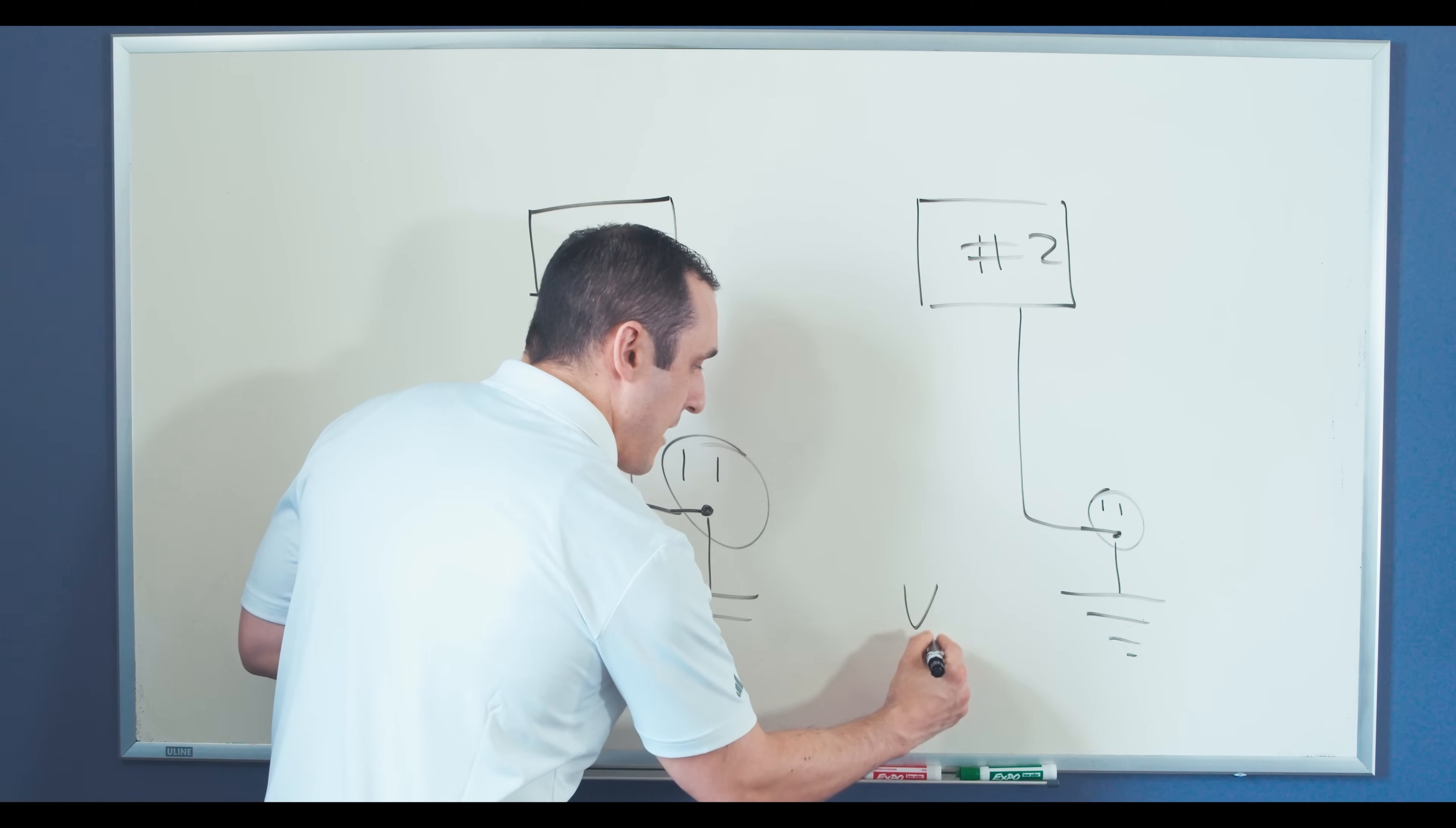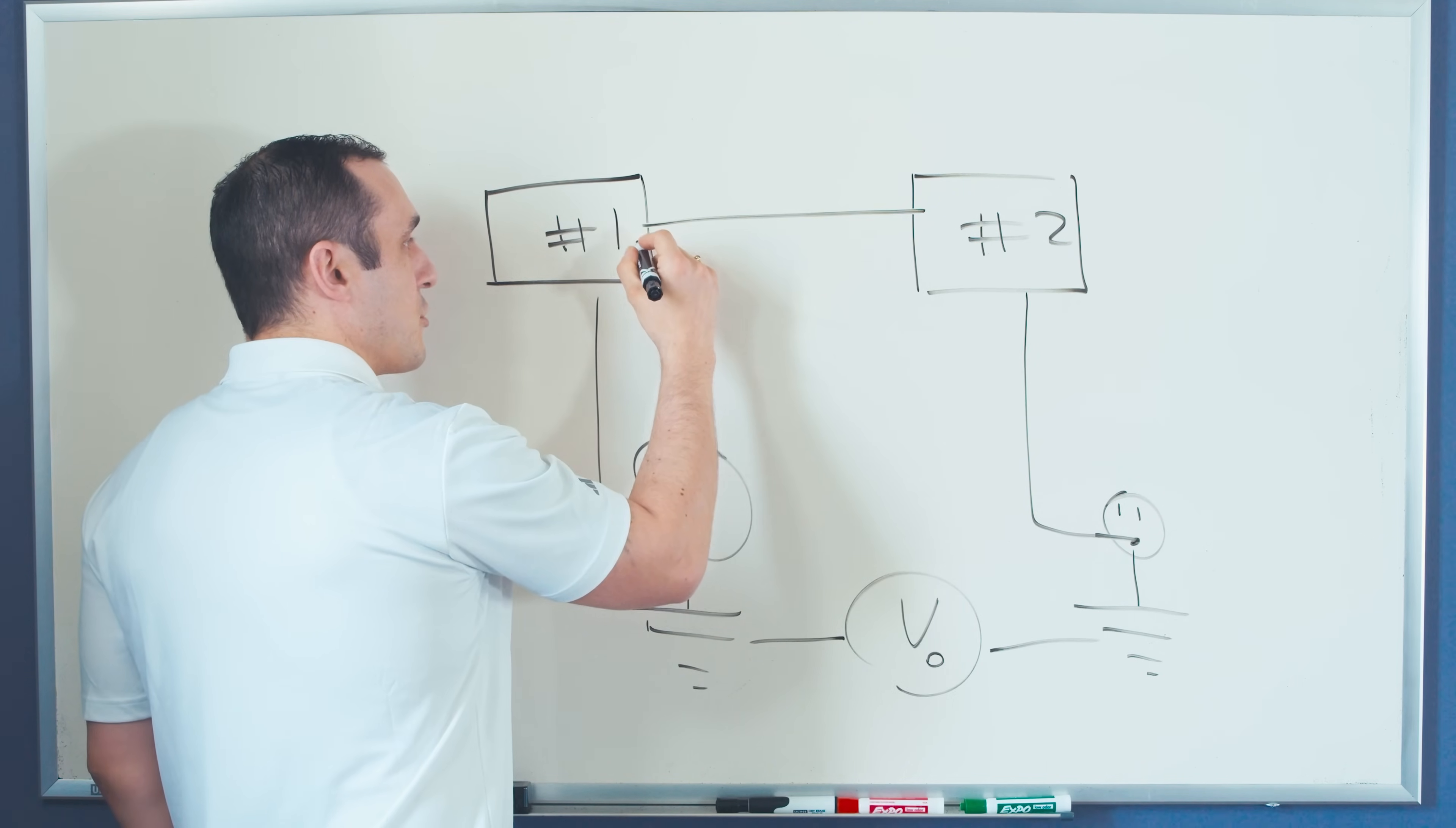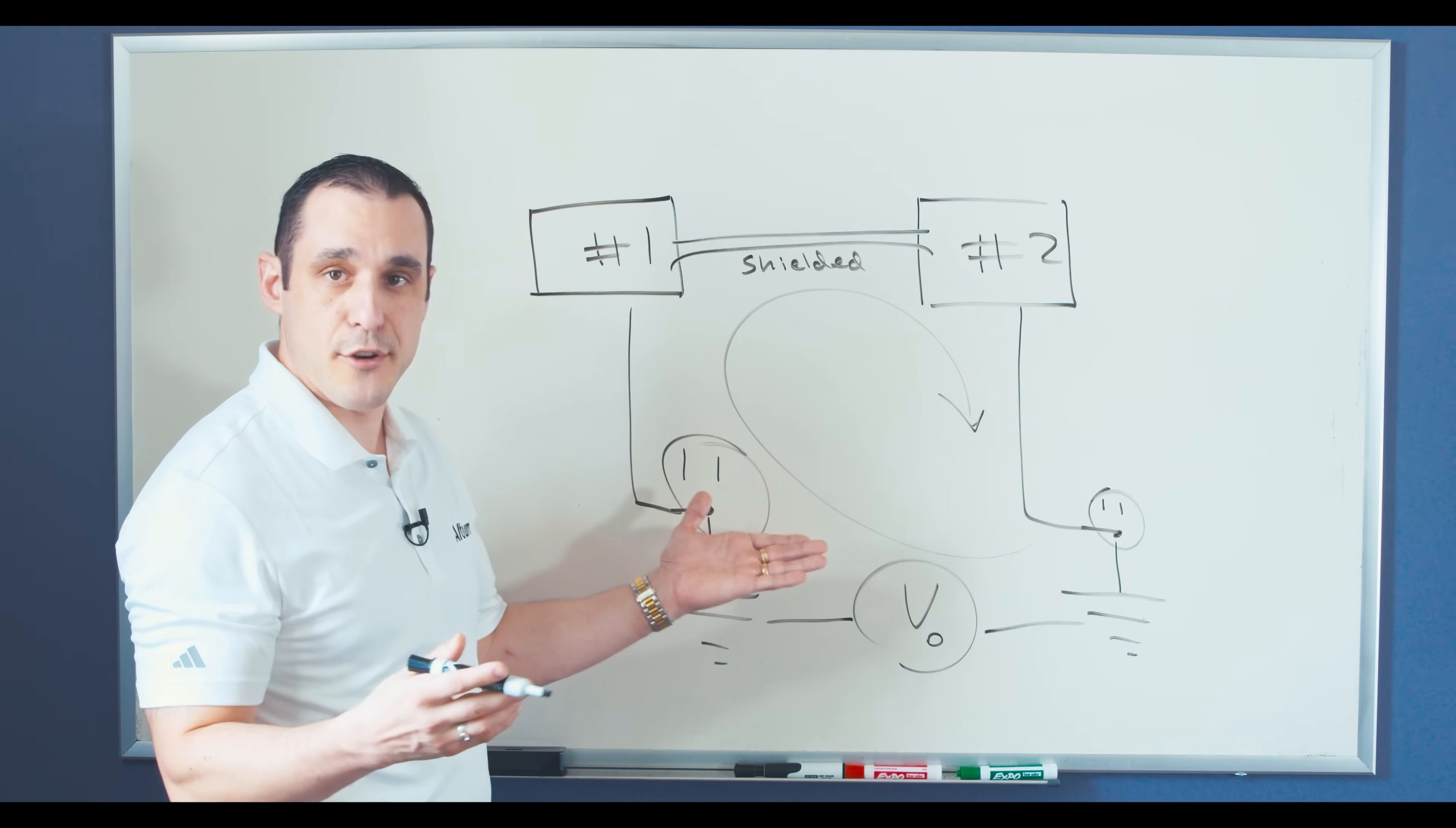And so what you can get is you can get a potential offset that exists between these two earth connections. Just having a potential offset on its own doesn't really matter until you interface these two pieces of equipment with each other. So for example, if we were to run a cable with some signal, and we were then to run a shield alongside that cable, so we have a shielded cable connection between equipment number one and number two, we have now created a big loop here that takes this earth connection on this side, bridges it to this side, and now this voltage offset between these two grounds can then cause some current to flow along this loop. This is essentially a ground loop.